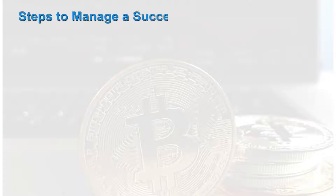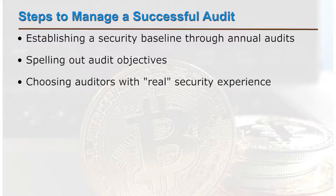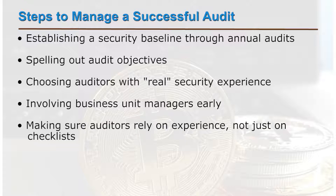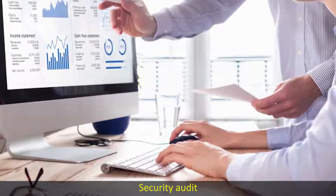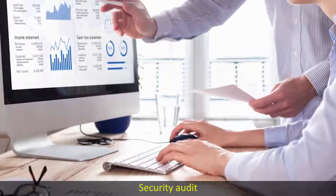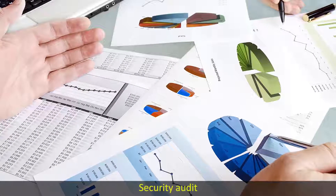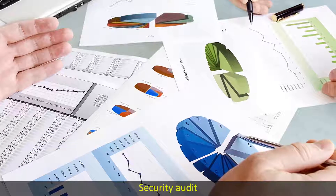Some of the steps to manage a successful audit include: establishing a security baseline through annual audits, spelling out audit objectives, choosing auditors with real security experience, involving business unit managers early, making sure auditors rely on experience and not just checklists, and insisting that auditors' reports reflect the organization's risks. The auditors' report should include a brief executive summary stating the security posture of the organization, providing a road map for improving it.